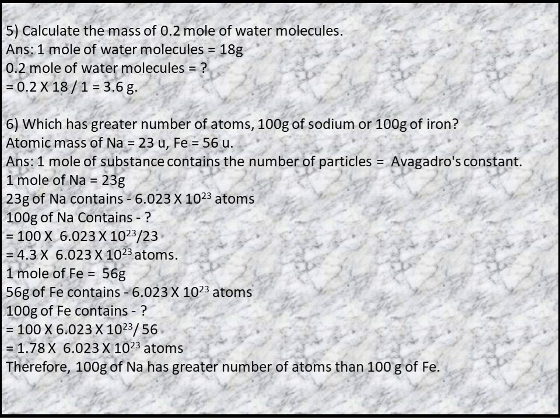Q6: Which has the greater number of atoms — 100g of sodium or 100g of iron? Atomic mass of Na = 23u, Fe = 56u. 100g of Na contains 100 × 6.022 × 10²³ ÷ 23 = 4.3 × 6.022 × 10²³ atoms. 100g of Fe contains 100 × 6.022 × 10²³ ÷ 56 = 1.78 × 6.022 × 10²³ atoms. Therefore, 100g of sodium has the greater number of atoms.